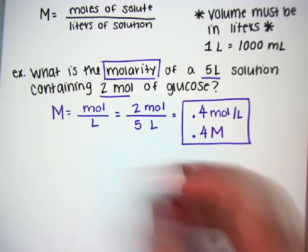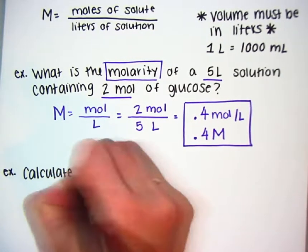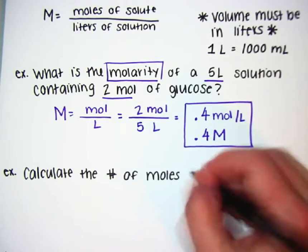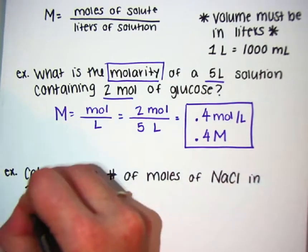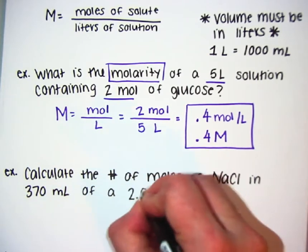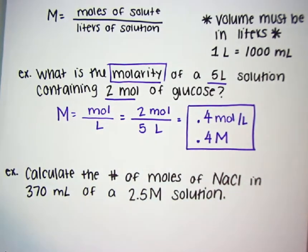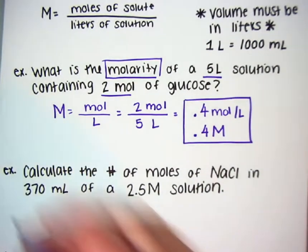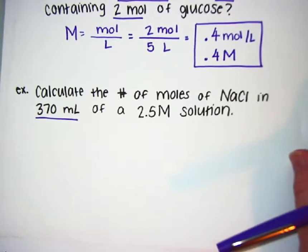We'll do one more easy one and then we'll kick it up a notch. Calculate the number of moles of sodium chloride in 370 milliliters of a 2.5 molar solution. Remember, very important — your volume must be in liters. In this case, we were given milliliters, so we can set this up like a conversion that we did in stoichiometry.